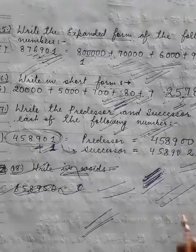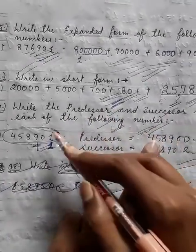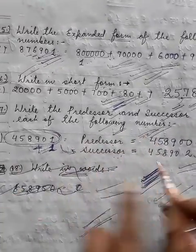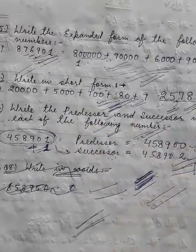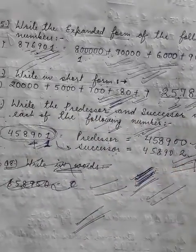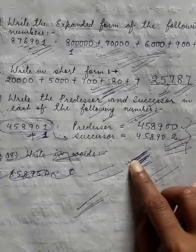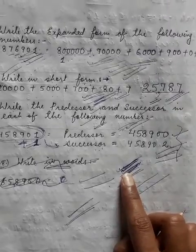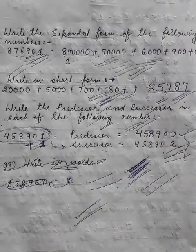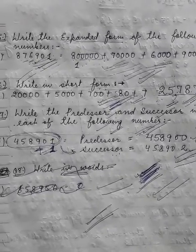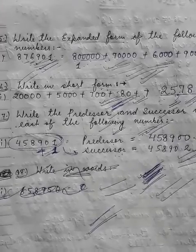And predecessor-successor kya hota hai? Predecessor ek number kam hota hai diye gaye number se, aur successor ek number adhik hota hai. Now you can find predecessor, successor, and many more by following the steps I have taught in this class. You are now able to do this exercise very perfectly. Thank you so much class — I will see you in my next class. Thank you so much.